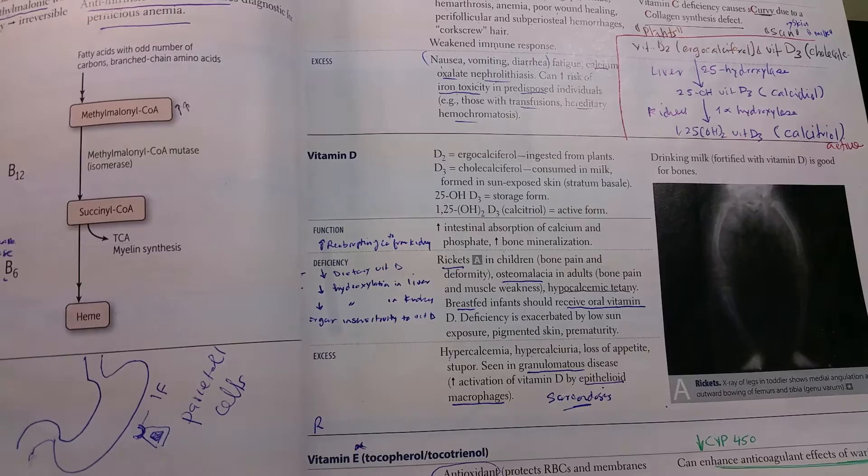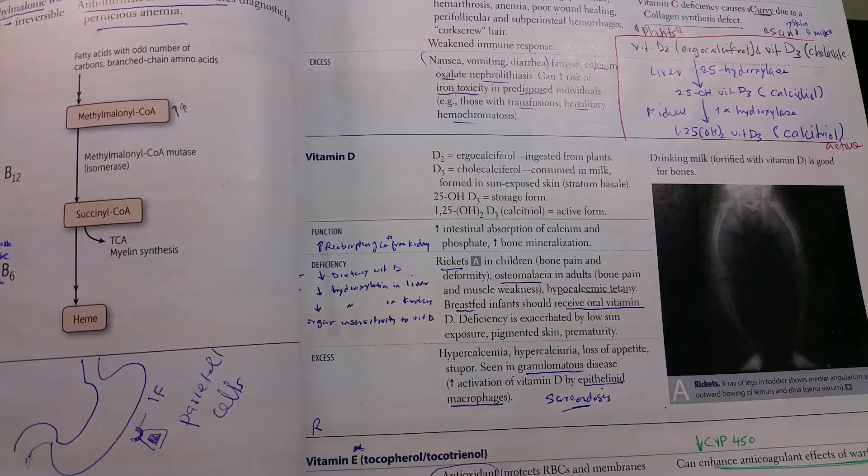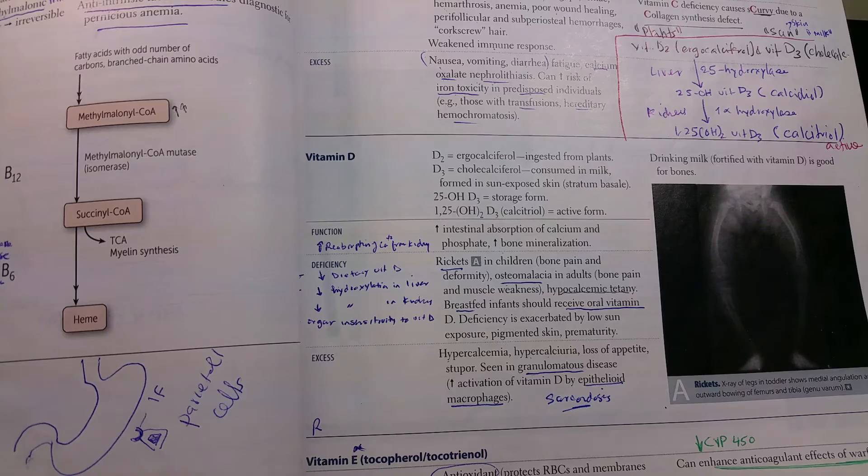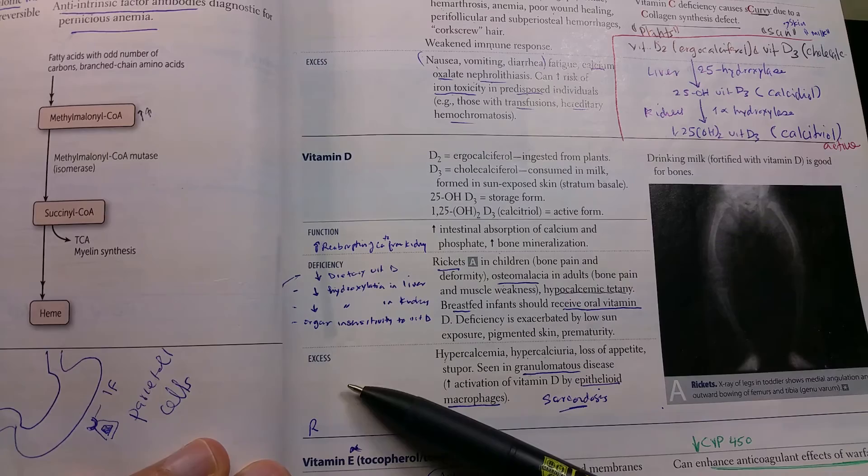What's the function of vitamin D? It mainly increases calcium and phosphate. How does it do that? It increases the intestinal absorption of calcium and phosphate, and it also increases absorption of calcium from the kidneys.